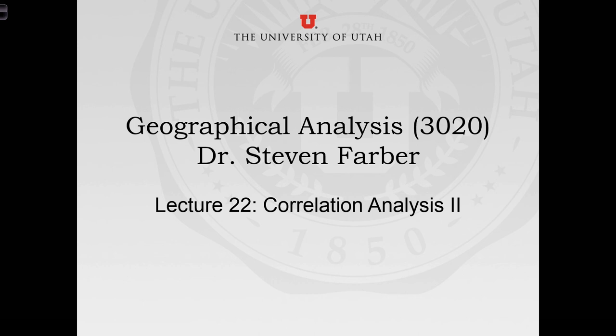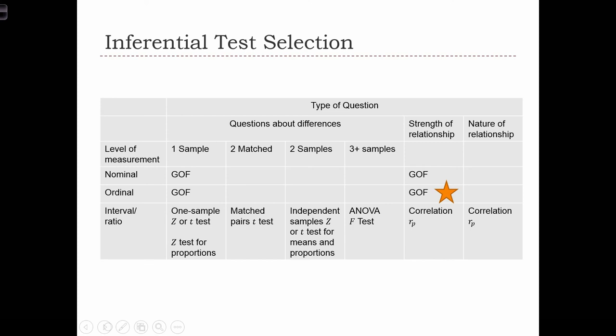Welcome to Geographical Analysis, Lecture 22 on Correlation Analysis. Last class we learned about Pearson's R statistic, which is a correlation statistic that can be applied to interval and ratio data in order to find the strength of linear monotonic relationships between two variables. Today we're going to look at a few different statistics for correlation that relax some of the assumptions about the nature of the relationship between the two variables.